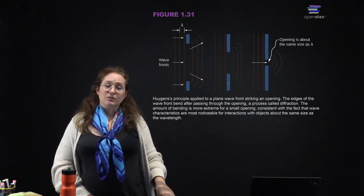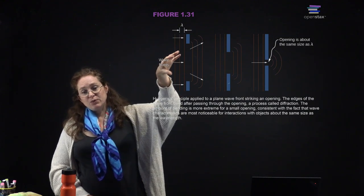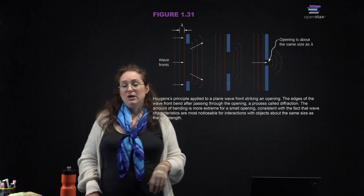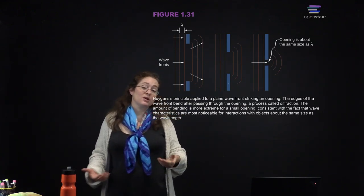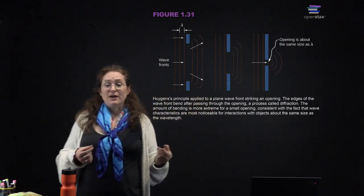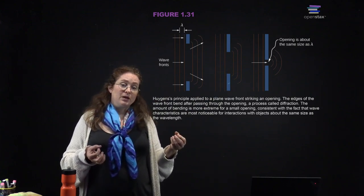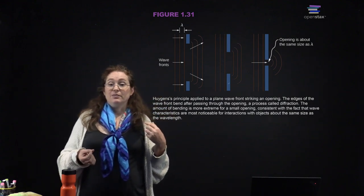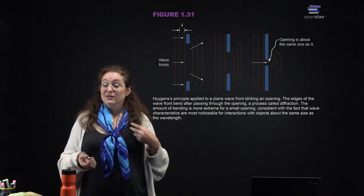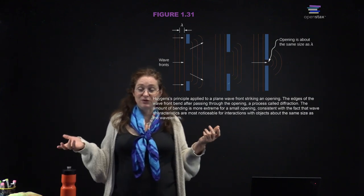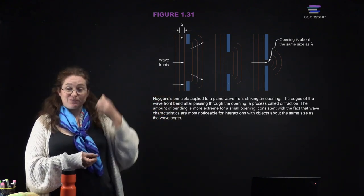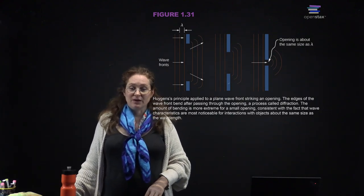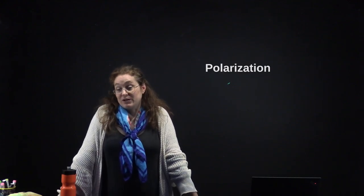Applying Huygens' Principle to a plane wave hitting an opening: the edges of the wave front bend after passing through the opening — that is diffraction. The amount of bending is more extreme for a small opening, or an opening small compared to the wavelength of light. To see this effect for light waves, you need an obstacle on the order of the wavelength of light. You can actually get diffraction using your hair — pull a hair out of your head, shine a laser through it, and you can see diffraction around the hair and use it to measure the width of your hair.